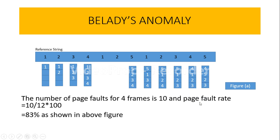Now calculating the total number of page faults occurring, we have 10 page faults total. The page fault rate comes to around 83%. As you can see, the page fault rate is increasing. Hence, we call this type of situation or condition Bélády's Anomaly.